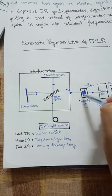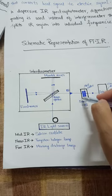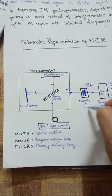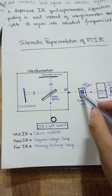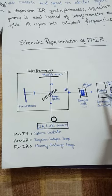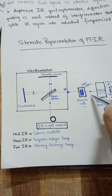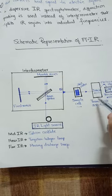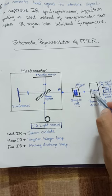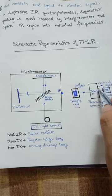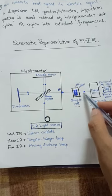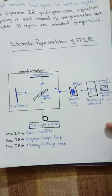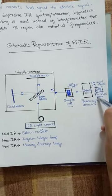The other path goes to the movable mirror, which is adjusted so that constructive interference is produced. These IR radiations then fall on the sample in the sample cell. After absorption of the radiation, the beam falls on the detector, which detects the signal in the form of electrical signals — converting IR radiation into electrical signals recorded as a spectrum.